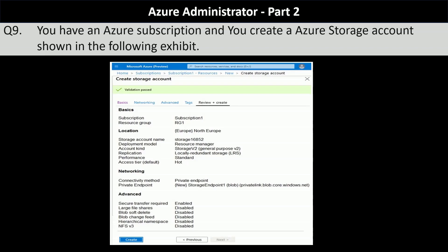Select the answer choice that completes each statement based on the information in the screenshot. The minimum number of copies of the storage account — your options are one, two, three, and four. Since the replication type was locally redundant storage, and locally redundant storage replicates your storage account three times within a single data center in a primary region, the correct answer is option C — three.